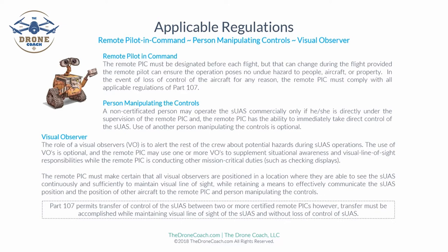The use of a visual observer (VO) is optional. The remote pilot in command may use one or more visual observers to supplement situational awareness and visual line-of-sight responsibility while conducting other mission-critical duties. The remote pilot in command must ensure that all visual observers are positioned where they can see the unmanned aircraft continuously and sufficiently to maintain visual line of sight, while retaining a means to effectively communicate the aircraft's position and the position of other aircraft to the remote pilot and person manipulating controls.